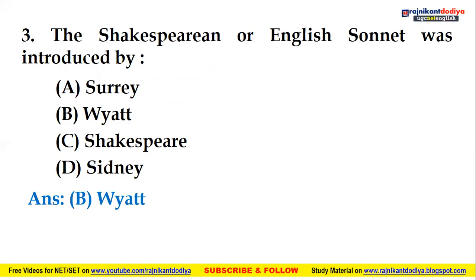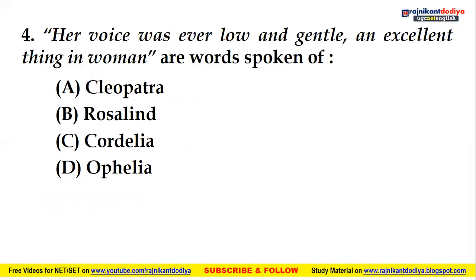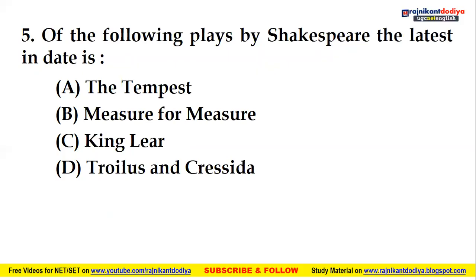Fourth question: 'Her voice was ever low and gentle, an excellent thing in woman' — for whom are these words spoken? Options: Cleopatra, Rosalind, Cordelia, or Ophelia. The right answer is C, Cordelia.